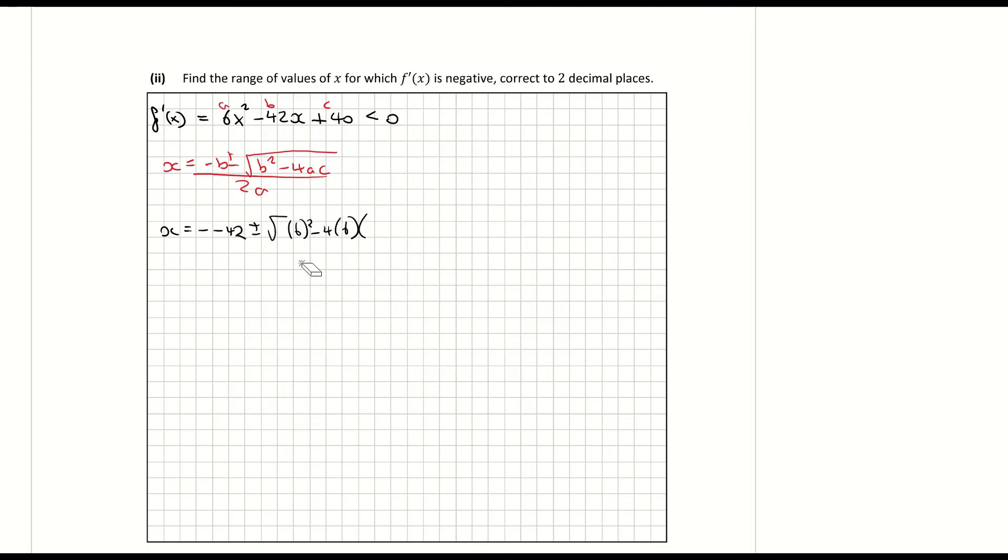Sorry that's wrong there. My b in the first bracket here should be minus 42. Minus 4 times a times c. All over 2 times my a which is 2 times 6. And when I evaluate that I'm getting x is equal to 5.86 and x is equal to 1.14.